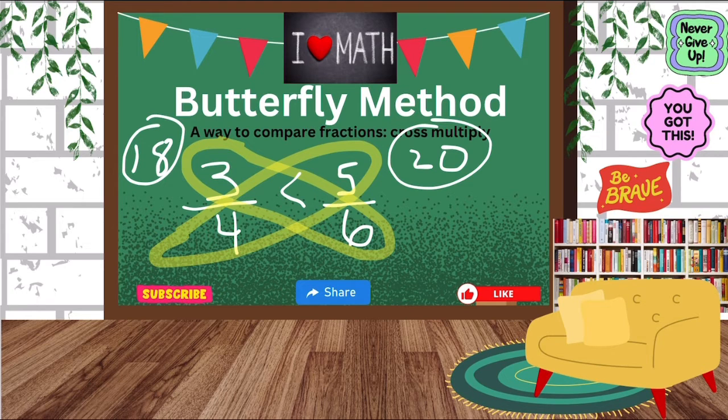So that tells us that the 18 is on the same side as the three-fourths and the 20 is on the same side as the five-sixths. So that tells us that three-fourths is less than five-sixths. See? So simple, right? That was so easy.